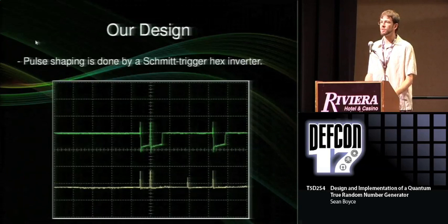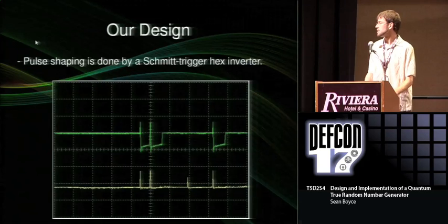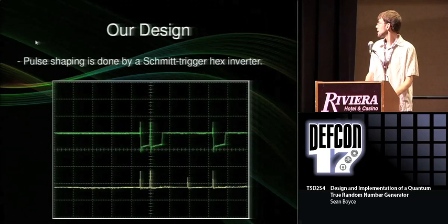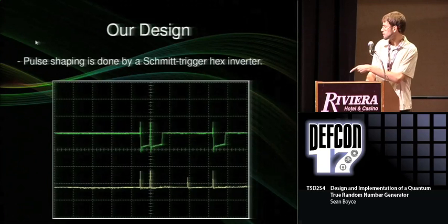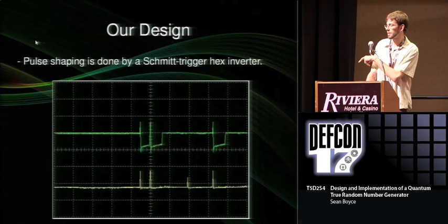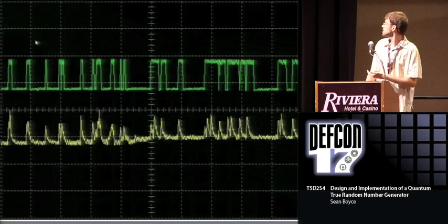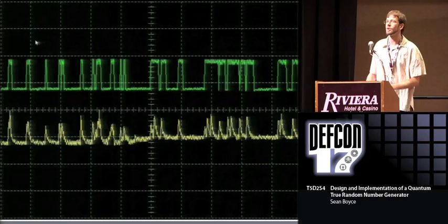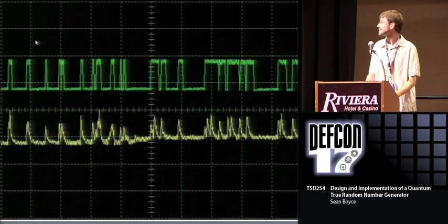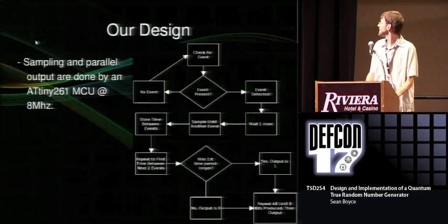When you have this at a usable voltage, you do a little bit of pulse shaping to make it easier to sample. For this I just use a Schmidt trigger hex inverter. So you see that when there's a spike, which would be hard for the microcontroller to catch, it translates into a bit bigger logic pulse. It's very pretty on a bigger sample.